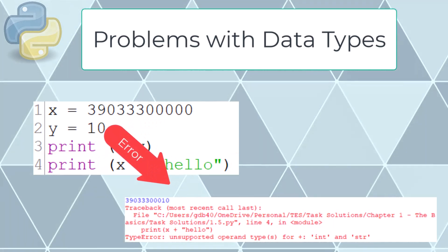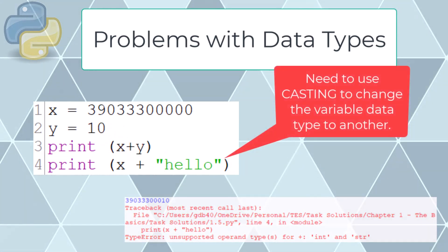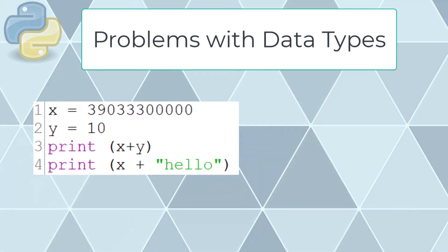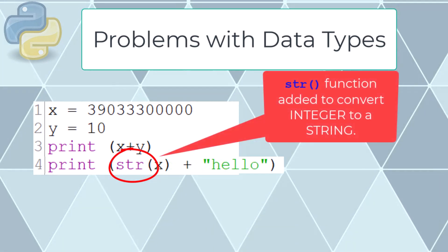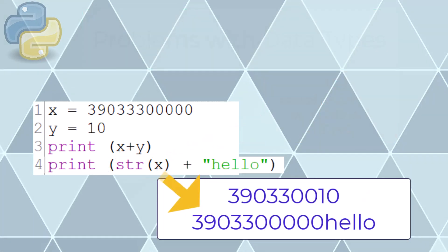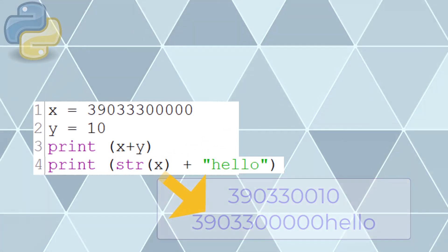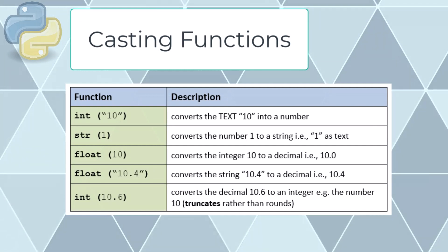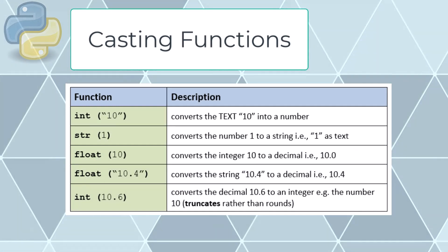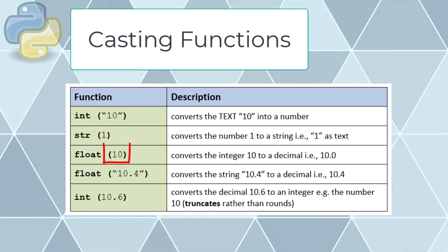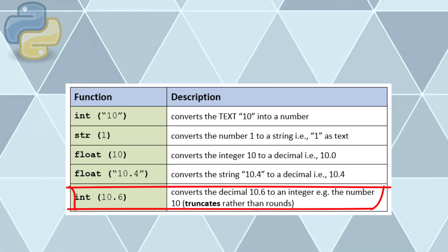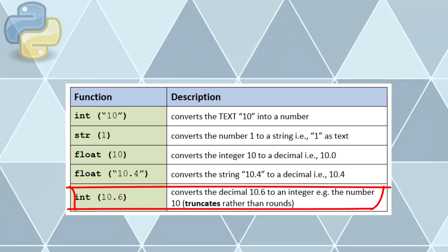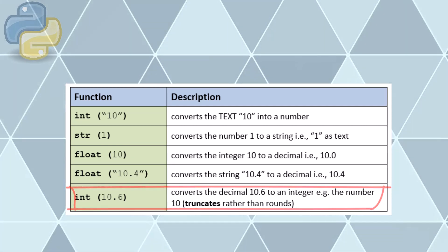We can solve this problem using casting — changing the data type. We fix it by converting the integer into a string, although this will only add the text number to the word hello. In Python there are many casting functions to change data types. Note that the int() and float() functions can take either a string or number to convert, and with int() any decimal number will be automatically truncated — just removing the digits after the decimal point.